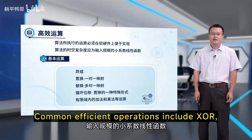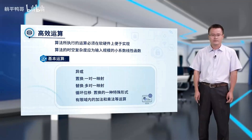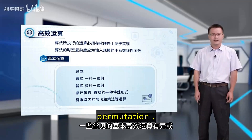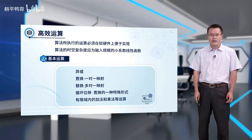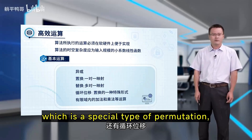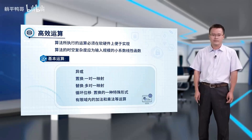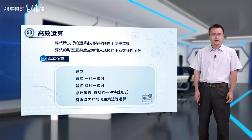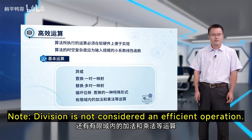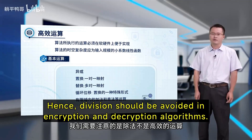Common efficient operations include XOR, permutation, substitution, circular shift (which is a special type of permutation), and arithmetic operations in finite fields. Note that division is not considered an efficient operation; hence, division should be avoided in encryption and decryption algorithms.